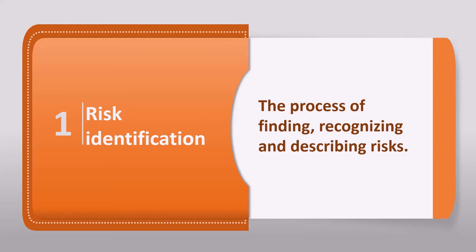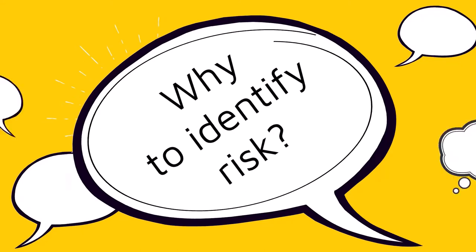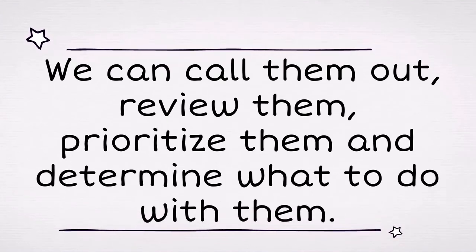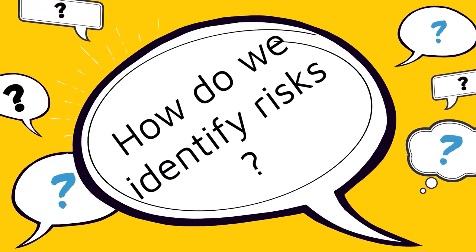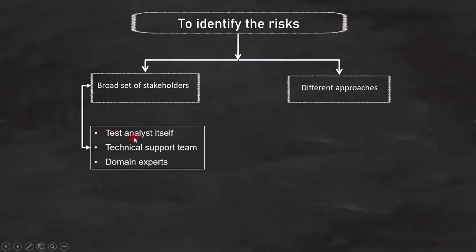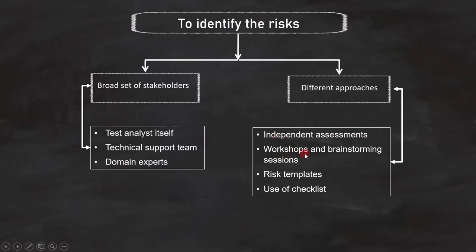We want to identify risks so we can call them out, review them, prioritize them, and determine what to do with them. To identify risks effectively, we can include a broad set of stakeholders and apply different approaches. Different stakeholders include the technical test analyst itself, the technical support team, and domain experts. Different approaches could be independent assessments, workshops and brainstorming sessions, risk templates, and use of checklists.